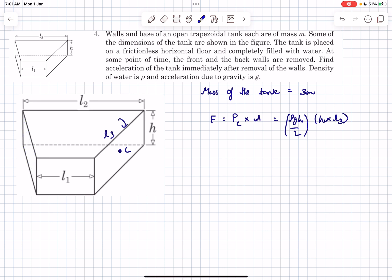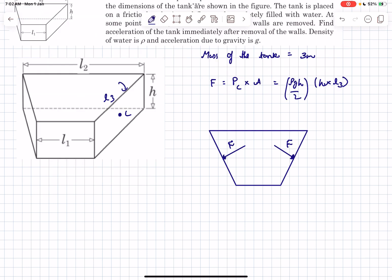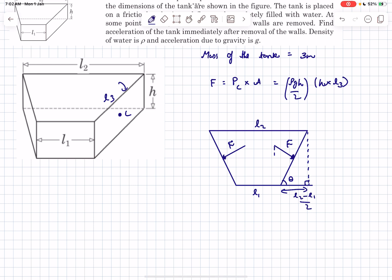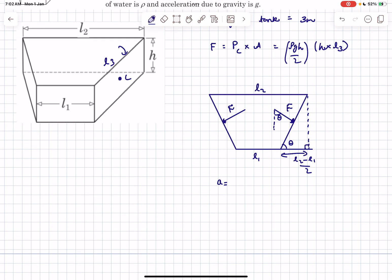The direction of the force is going to be perpendicular to the surface. The point of application is at a distance of h/3 from the bottom, but torque analysis is not necessary here. This is how the top view looks — the forces are perpendicular to the wall. Let's call this angle theta and complete the triangle. This distance equals (l2 − l1)/2. So if this is F, it makes angle theta with the vertical.